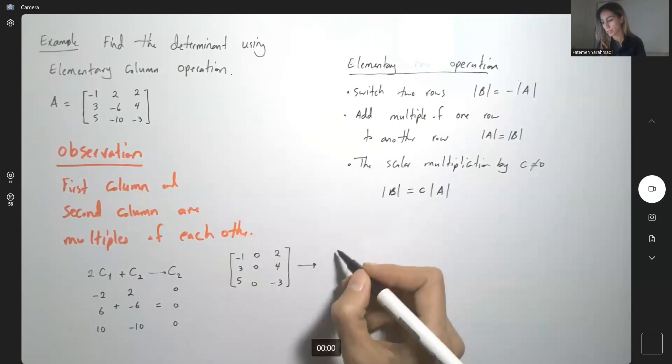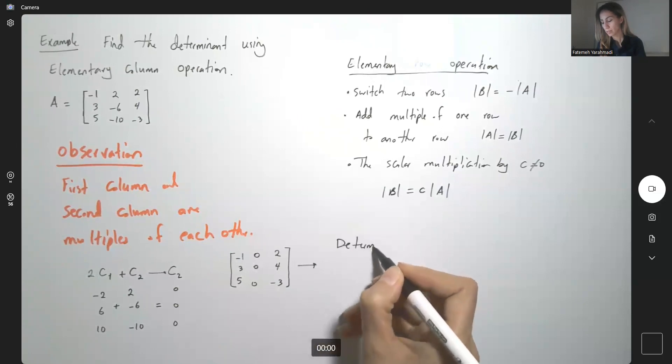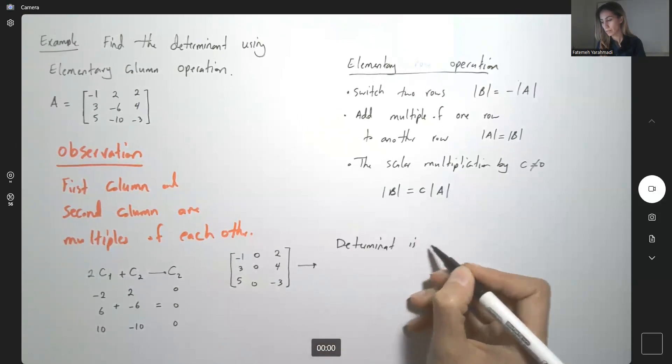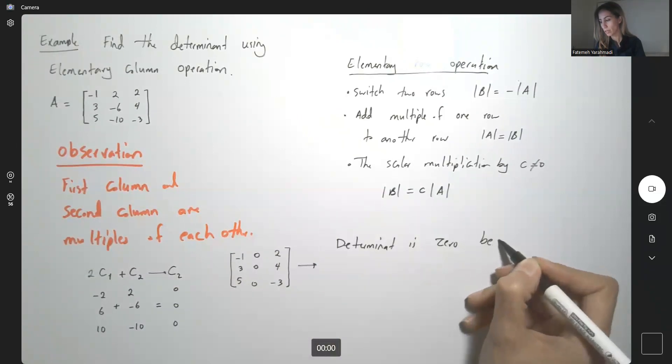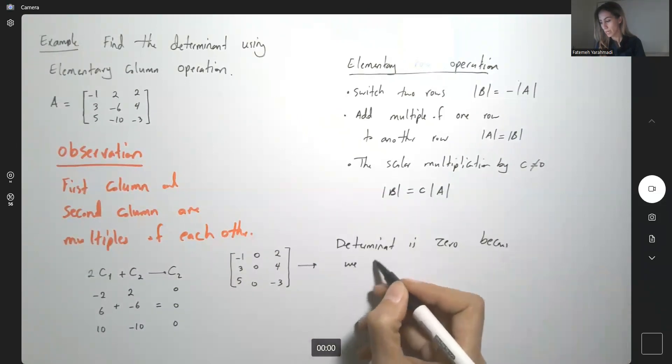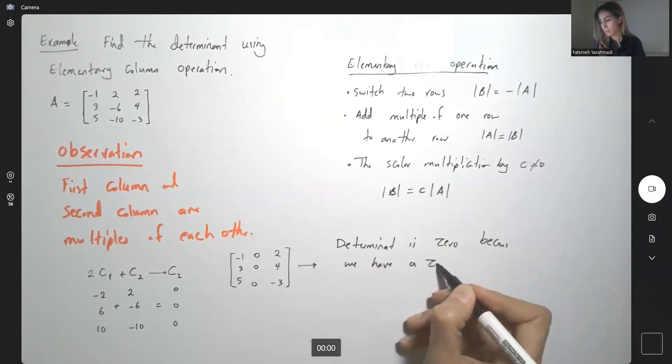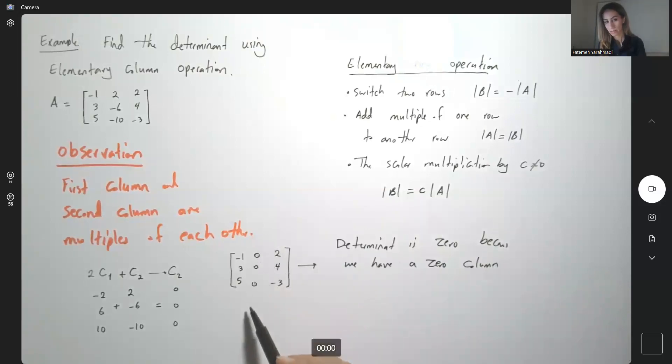What is the determinant of this matrix? The determinant is 0. Why? Because we have a 0 column. So as long as you have one 0 column, all elements on that column are 0, the determinant becomes 0.